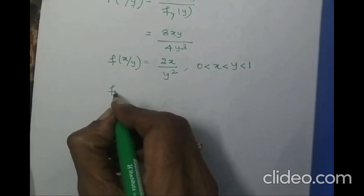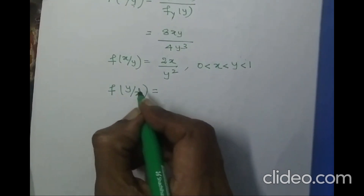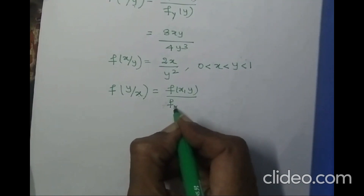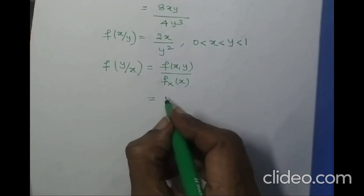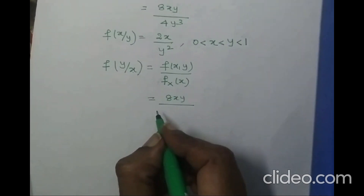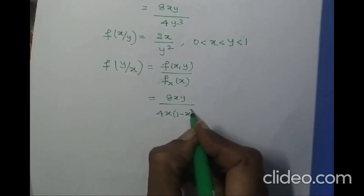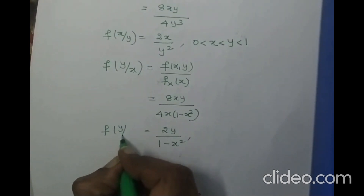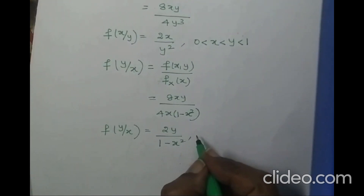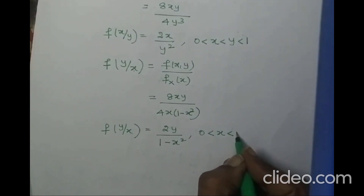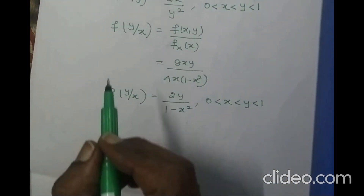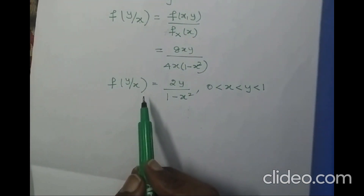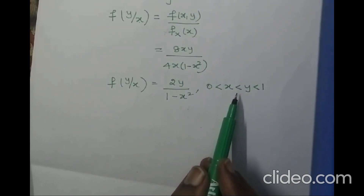The conditional density function of y given x is f(y|x) = f(x, y) / fx(x) = 8xy / [4x(1 − x²)] = 2y / (1 − x²). So: the conditional density function of x given y is f(x|y) = 2x/y² for 0 < x < y < 1, and the conditional density function of y given x is f(y|x) = 2y/(1 − x²) for 0 < x < y < 1.